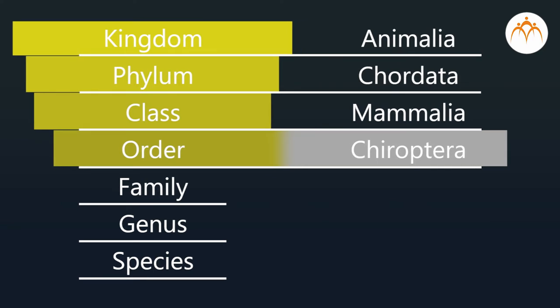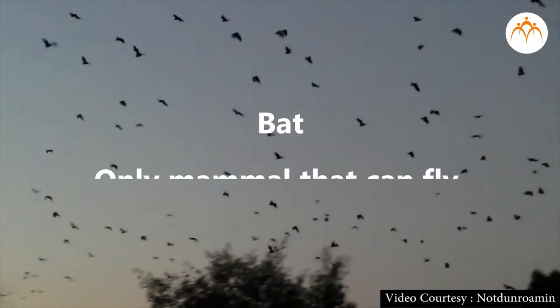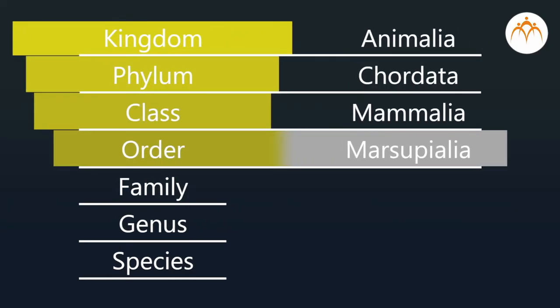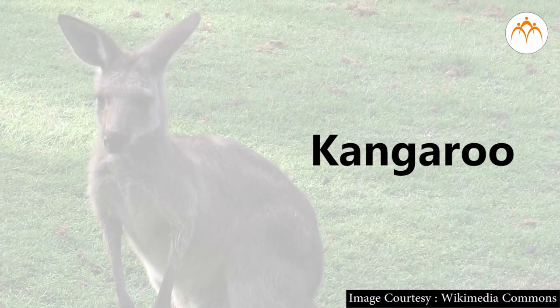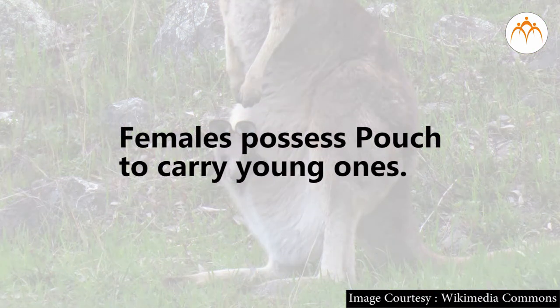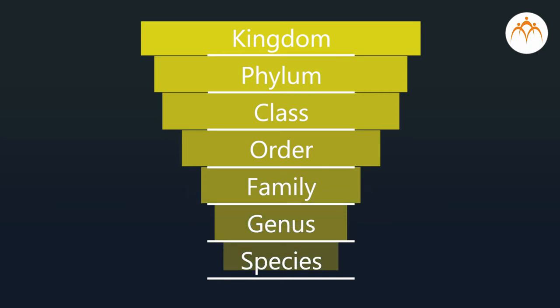Bat is a member of order Chiroptera — the only mammal that can fly. Kangaroo belongs to order Marsupialia, in which females possess pouches to carry young ones. Obviously, the hierarchy levels beyond order are also different for each of these animals.